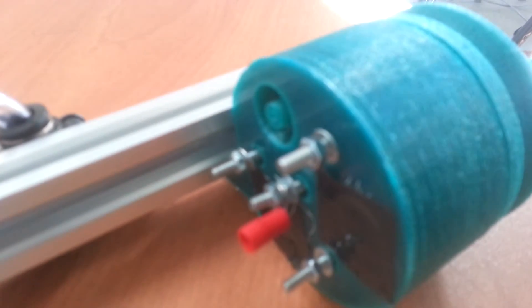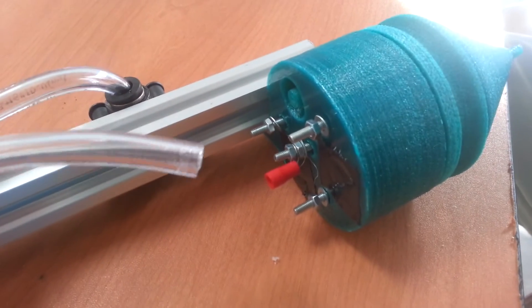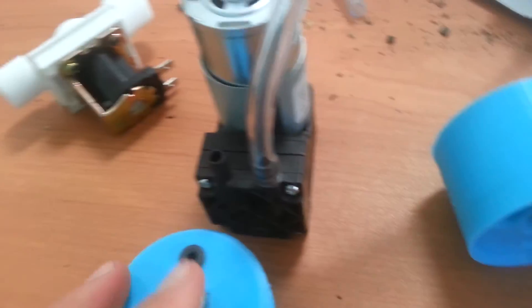And that barb, this barb, then we can put a flexible tubing on, which could then go to something like this vacuum pump right here.